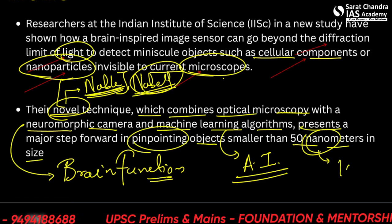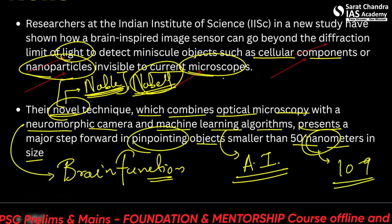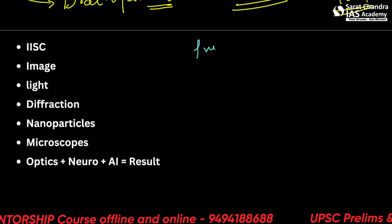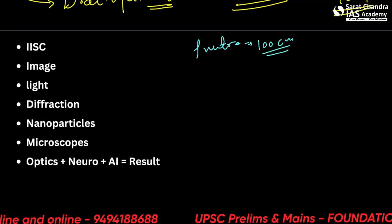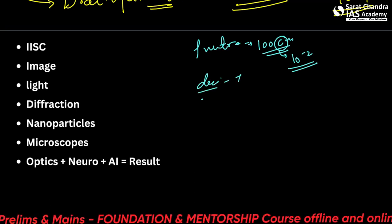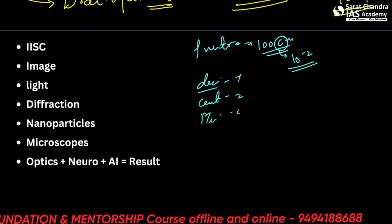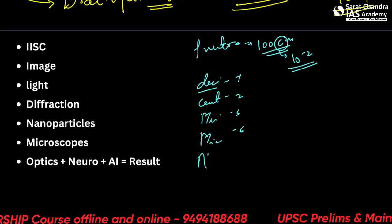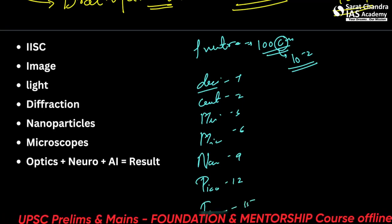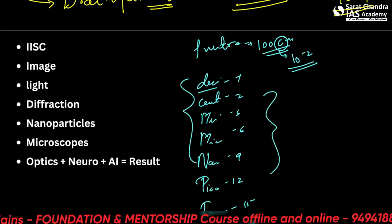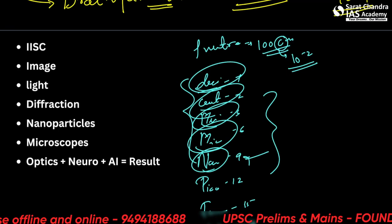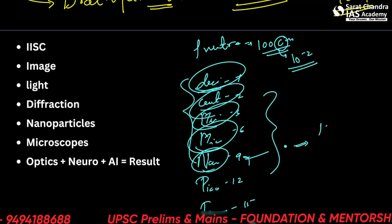A nanometer is 10 to the power of minus 9 meters. To put it in context: deci is 10⁻¹, centi is 10⁻², milli is 10⁻³, micro is 10⁻⁶, nano is 10⁻⁹, pico is 10⁻¹², femto is 10⁻¹⁵, and atto is 10⁻¹⁸. Particles in the nanometer range — 10 to the power minus 9 meters — are known as nanoparticles.